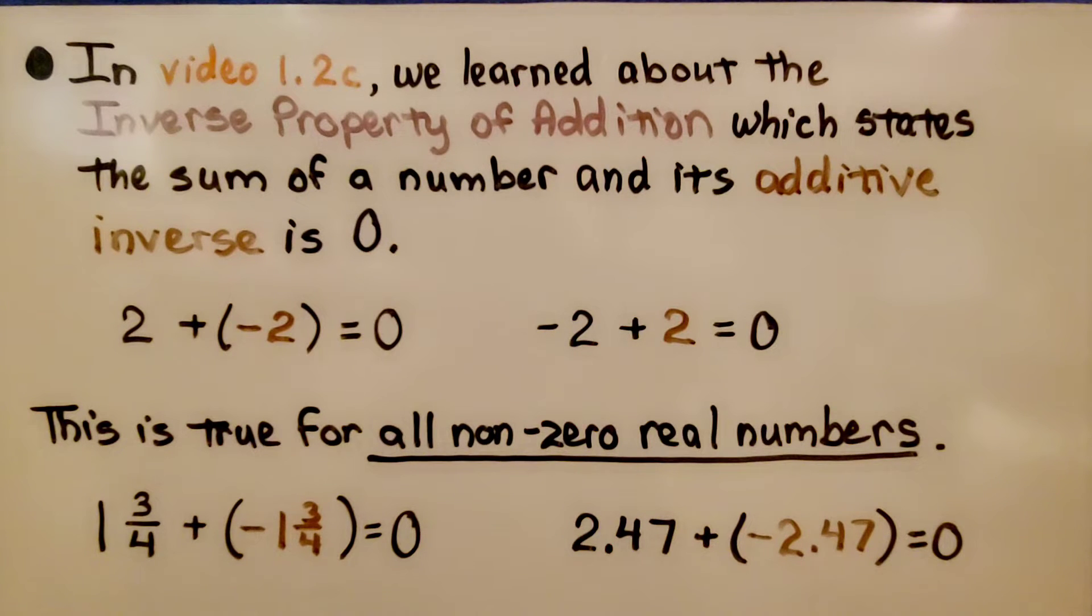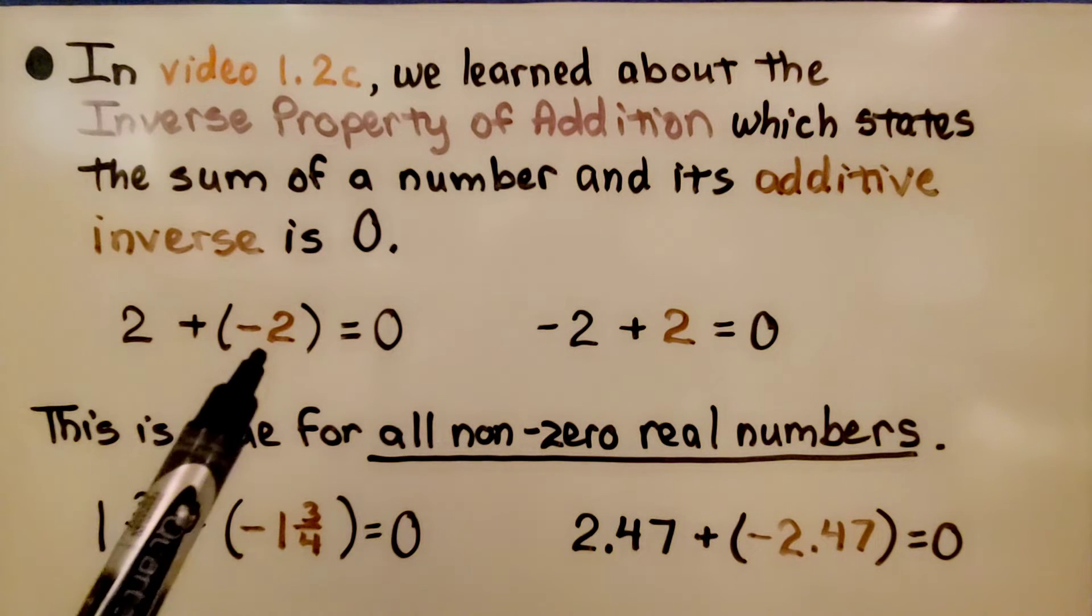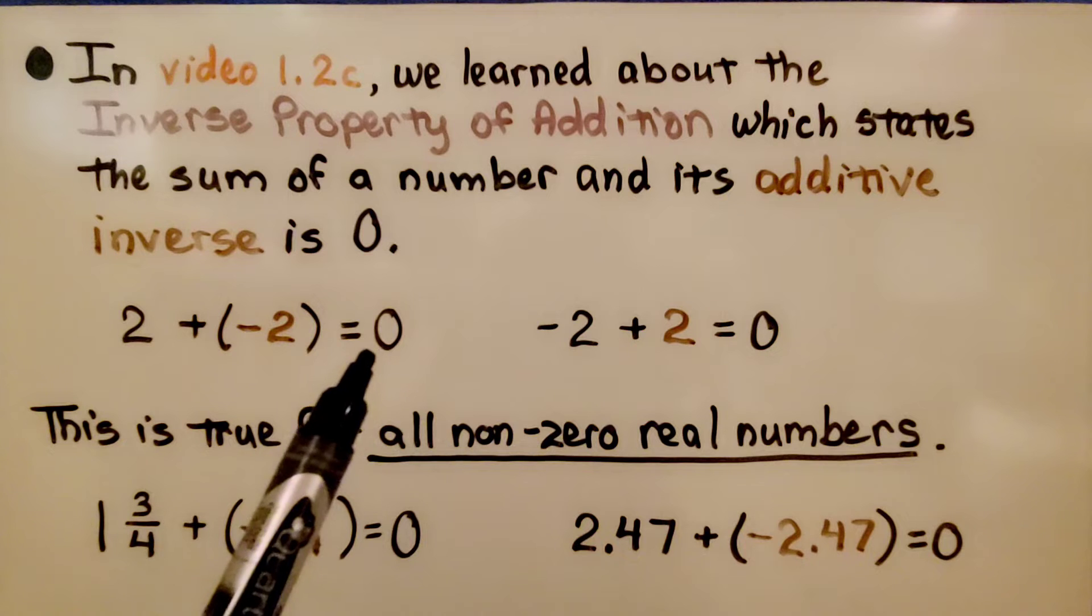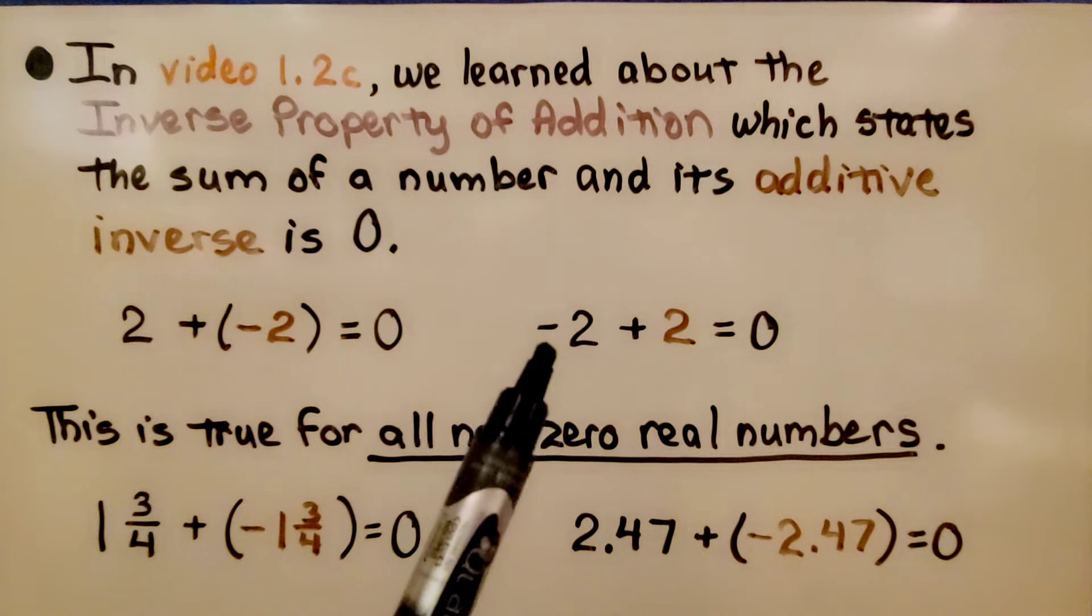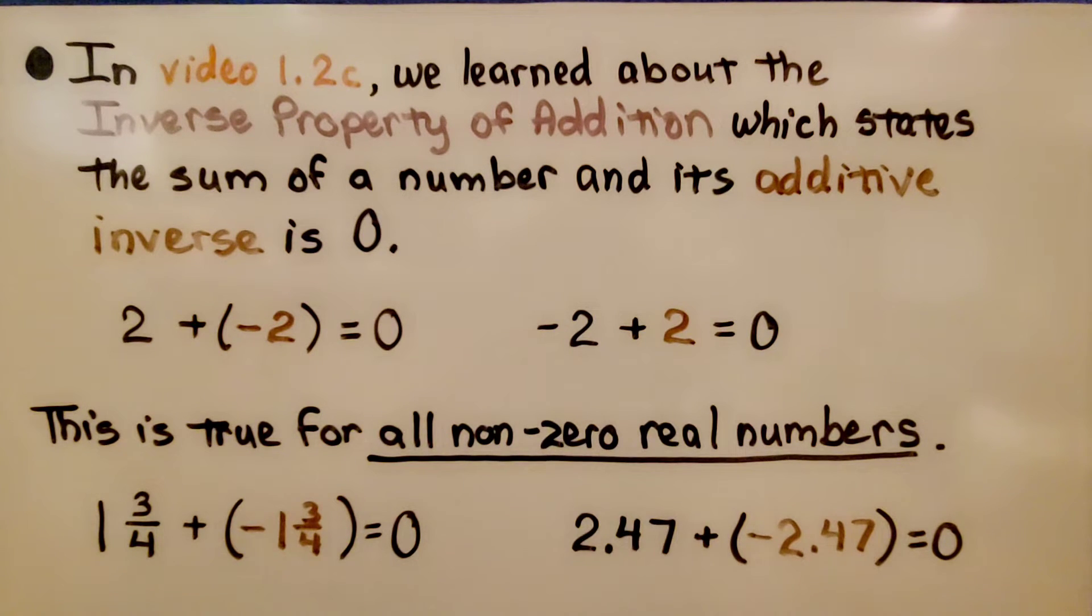In video 1.2c, we learned about the inverse property of addition, which states the sum of a number and its additive inverse is zero. We have positive two plus negative two equals zero. We have negative two plus positive two equals zero.